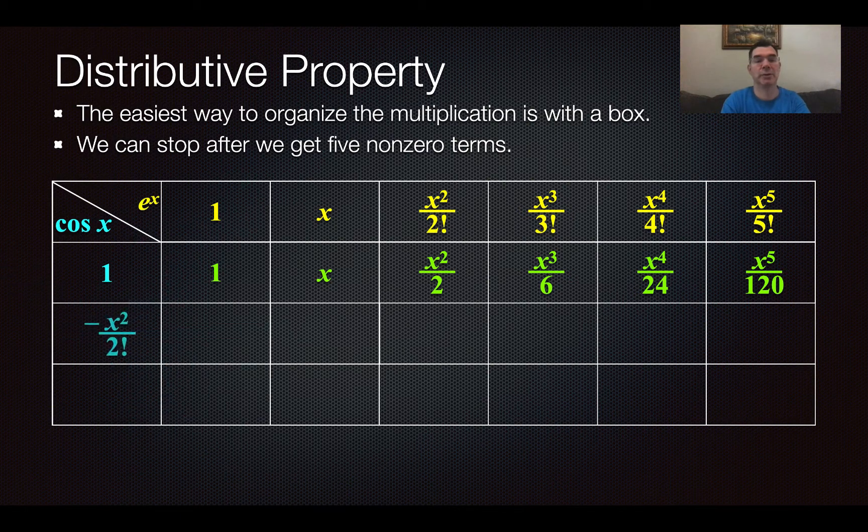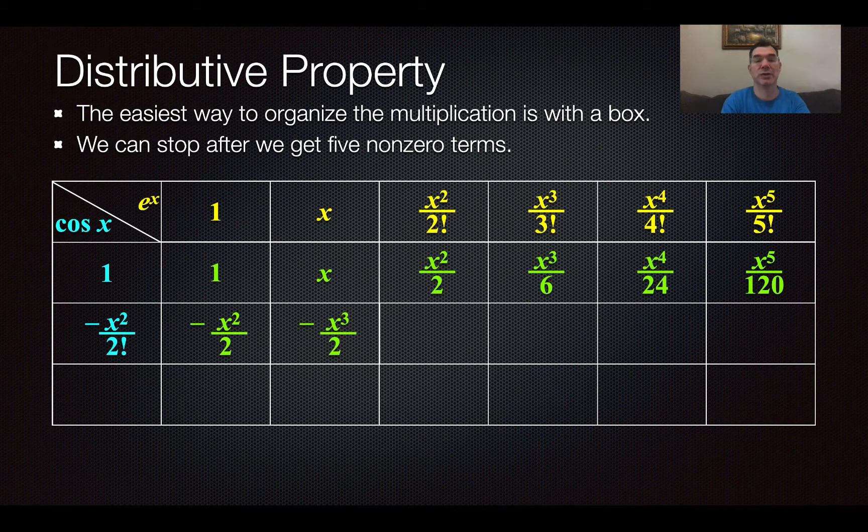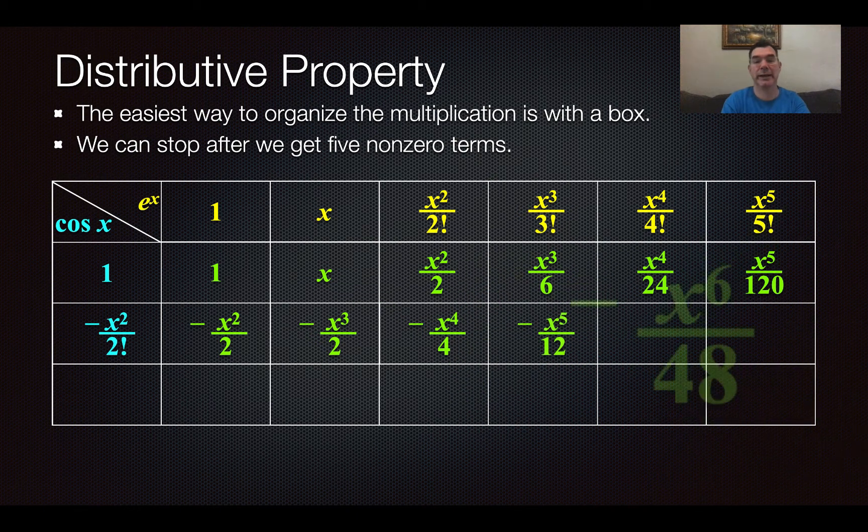So the next term in the Maclaurin series for cosine x is negative x squared over 2 factorial. So now I'm taking those yellow terms at the top and multiplying them by negative x squared over 2. So I get terms like negative x squared over 2, negative x to the third over 2, and so on, moving down the line.